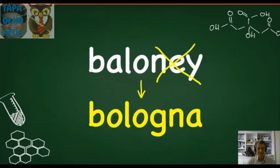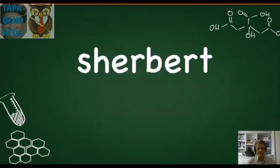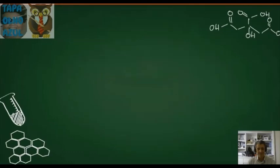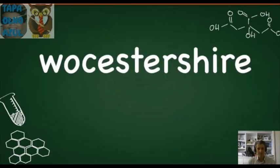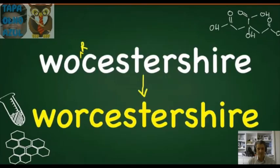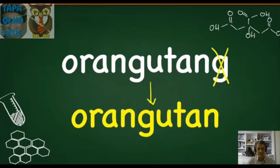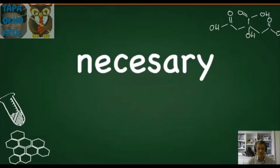Bologna. Bologna. Sherbet. The R sound doesn't come out. Worcestershire. Worcestershire. Worcestershire. Orangutan. Orangutan. The G, it's not pronounced.